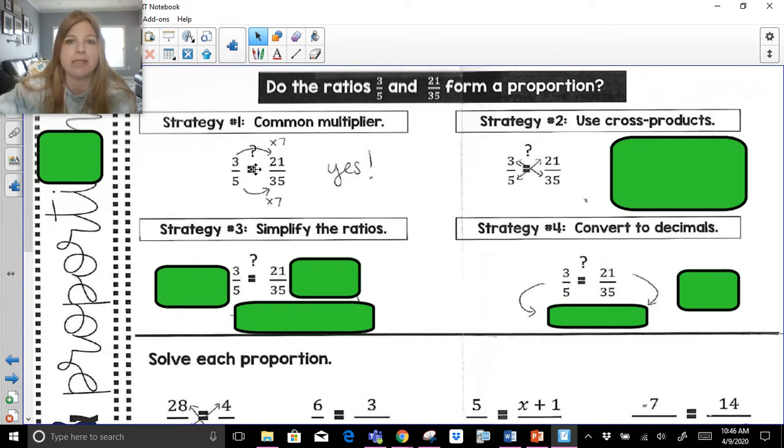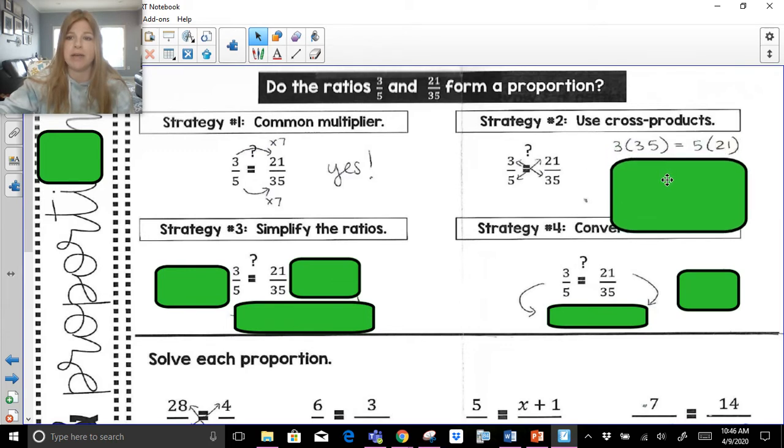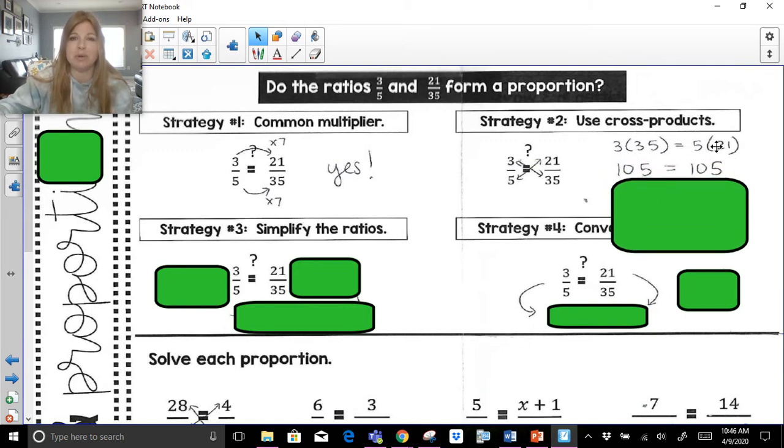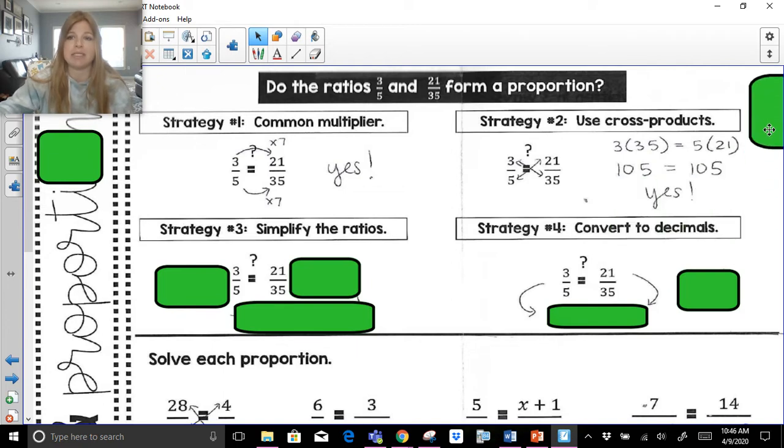Now, if this numerator was multiplying by 7 and the denominator is multiplying by 6, then it wouldn't be a proportion. Second one, cross products. Now, cross products works every single time, no matter what. So let's say you had a proportion and you could not figure out a common multiplier. Cross products. You multiply diagonally and you set those values equal to each other. And if they're equal to each other, then it's good. It's a proportion. If you get different answers, then it would be no good. So here, I would do 3 times 35 equals 5 times 21. I cross multiply. Cross products. 3 times 35 is 105. 5 times 21 is also 105. If I get the same answer, then that means yes. Now, of course, we already knew it was yes from this, but I'm just showing you the different strategies. So if we use cross products, we multiply diagonally, see if those values equal each other, we're good, that's it.